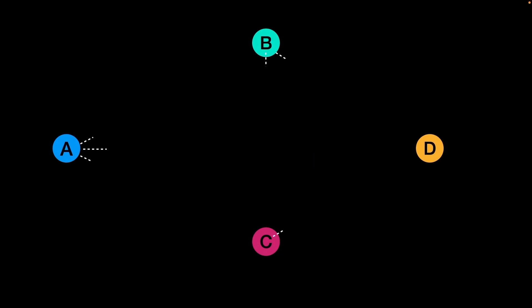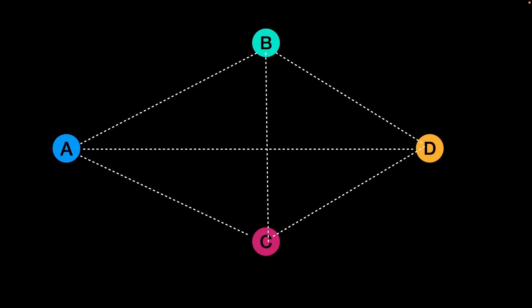Let's consider a small blockchain of four nodes. Node A is part of the blockchain and has a wallet containing a private key and a public key. Node A shares its public key with the other nodes — the public key is essentially Node A's address on the blockchain. When any transaction is performed, that information is shared with the other nodes, which use the public key to verify the identity of the sender.